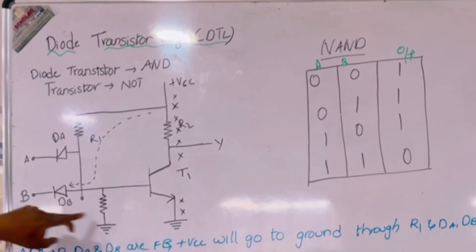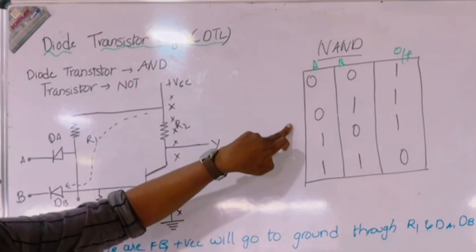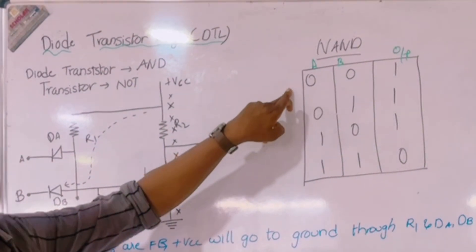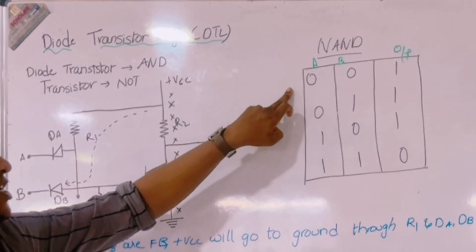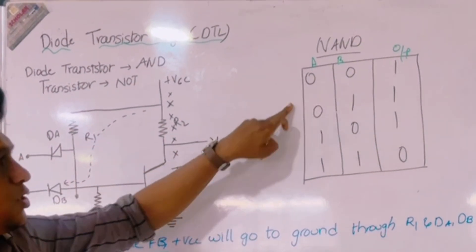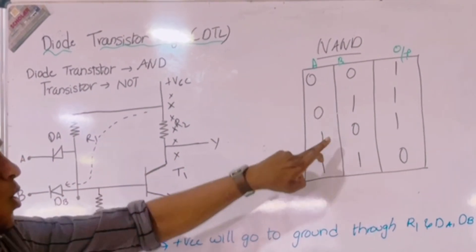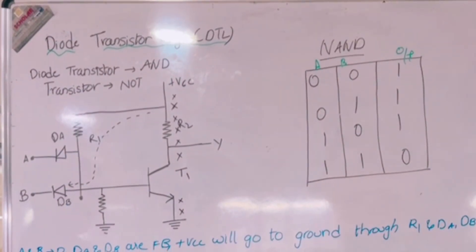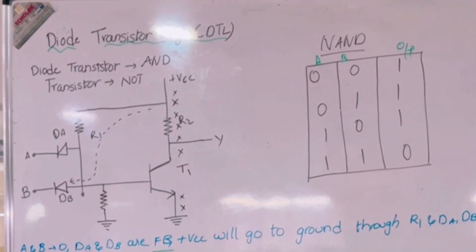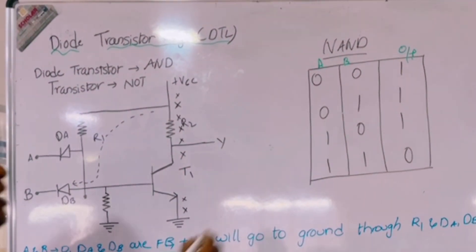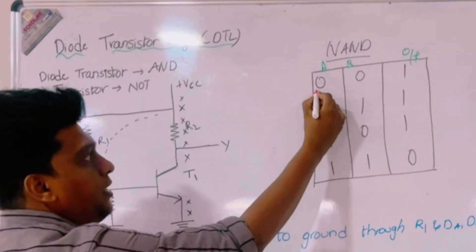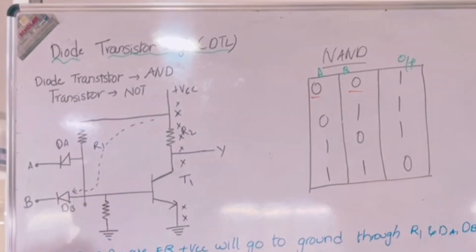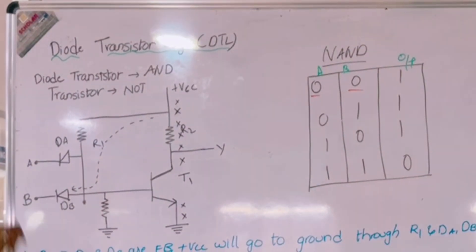First we are having four conditions. For inputs A and B we are going to give four conditions: 0,0 then 0,1 then 1,0 and 1,1.